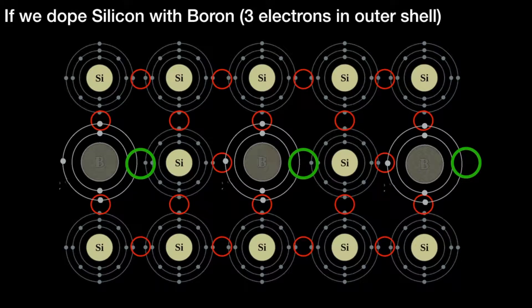In the same way, instead of using phosphorus, if we use boron to dope the silicon, boron only has three electrons in its outer shell. Where you've got the green circles, instead of a paired set of electrons, we've got the absence of an electron to form the pair. We call these holes.